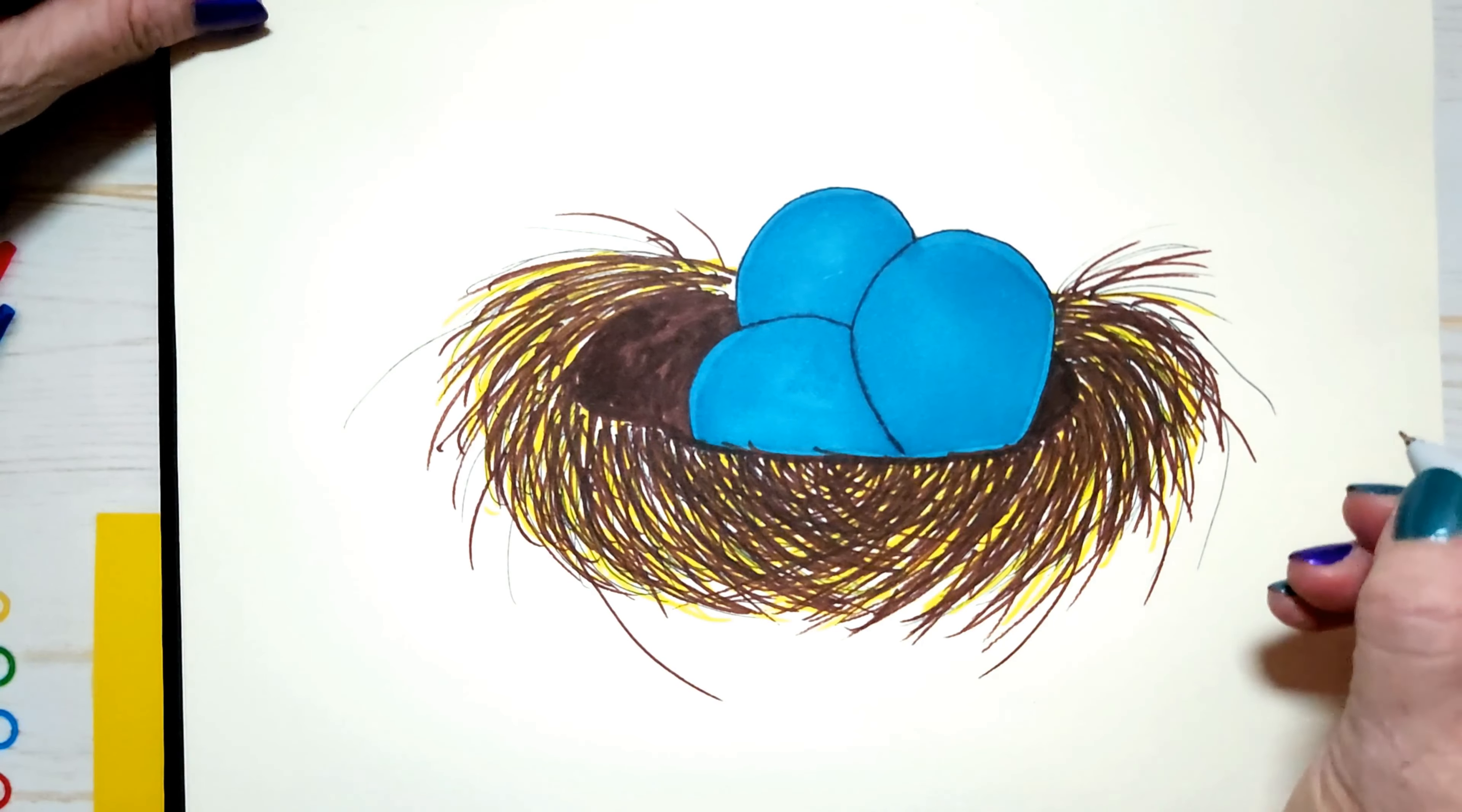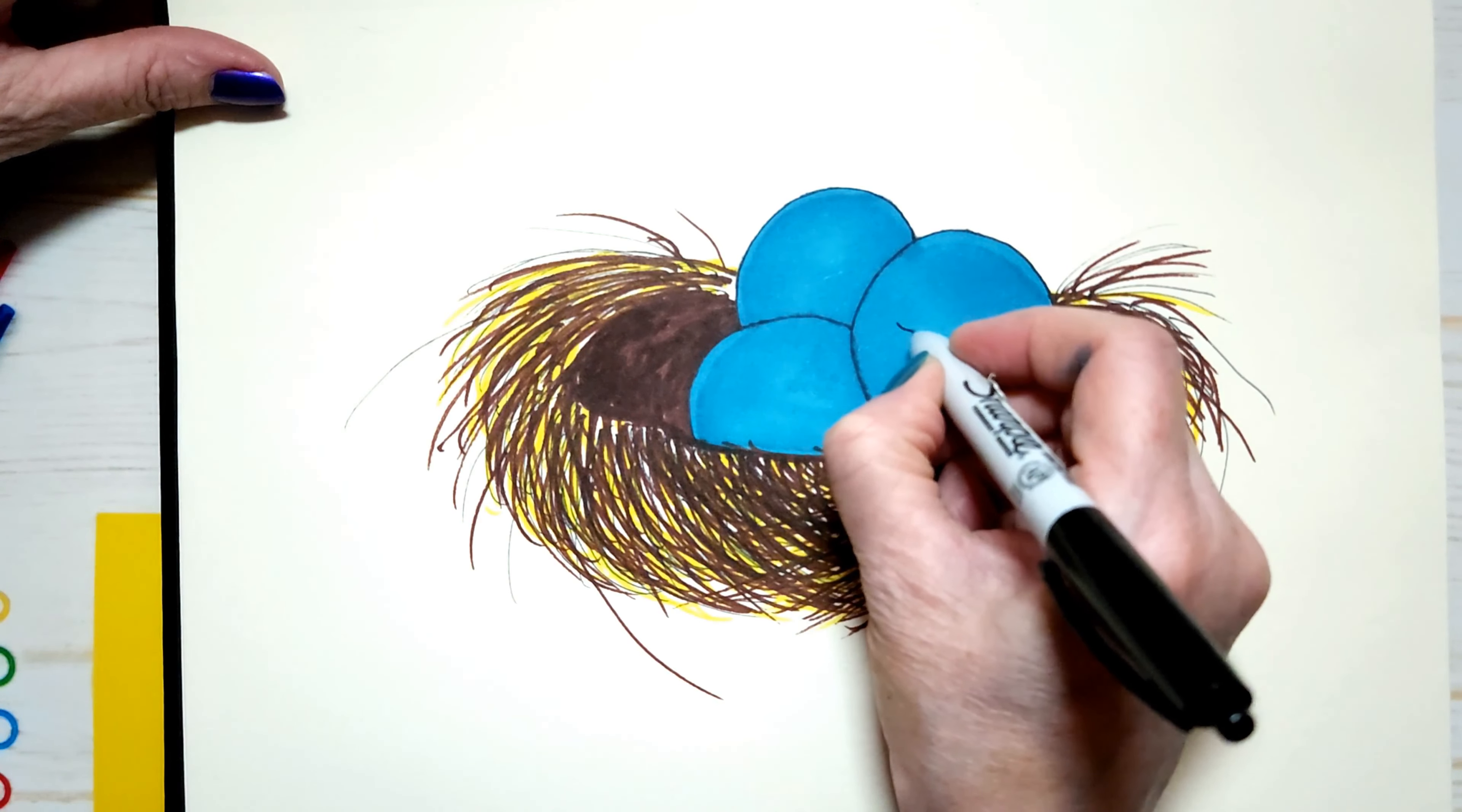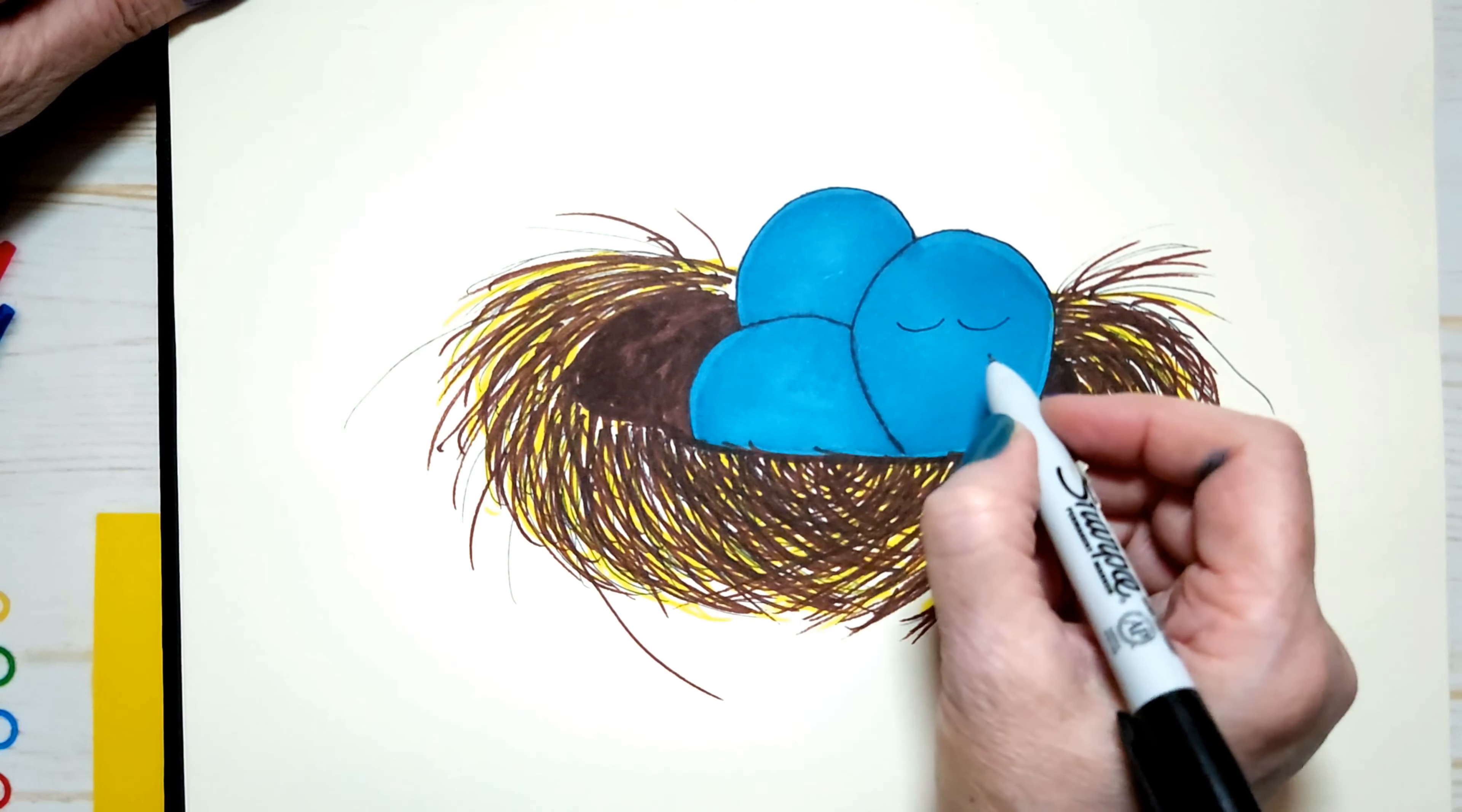So they're probably sleeping. So let's give them some sleepy faces. Like this. That's how you draw closed eyes. Little semi-circles like that. And they're happy.